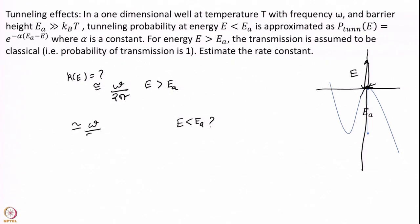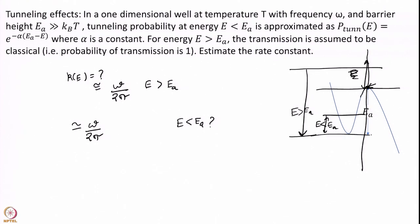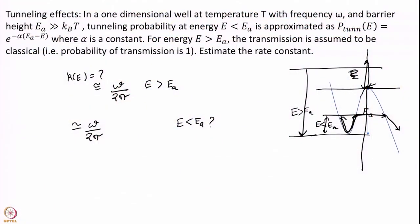For E less than Ea, I approximate K(E) as omega over 2 pi times the tunneling probability. My energy is below the barrier, and in one time period I assume I try to tunnel once — I come to the barrier and have some probability of leaking through. This is somewhat open-ended estimation, so K(E) for E less than Ea is omega over 2 pi times e to the power of minus alpha(Ea minus E).